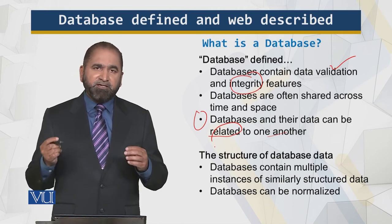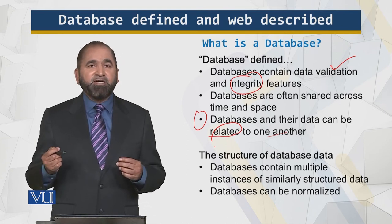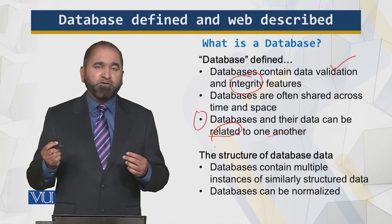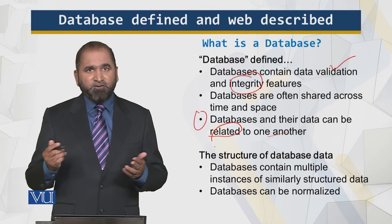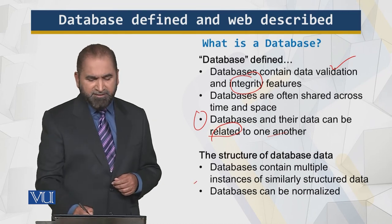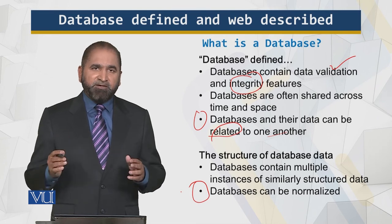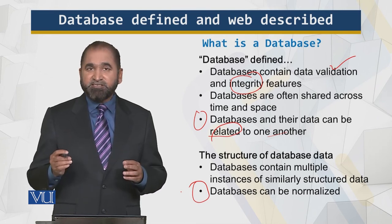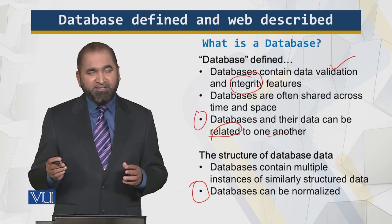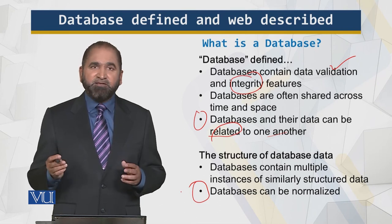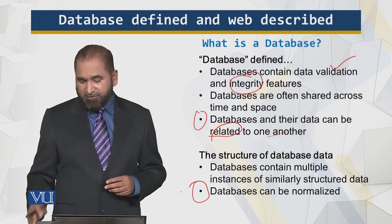I have data about customers who have been purchasing different items, and I have other customers purchasing other sets of items — those are all related. Databases can also be normalized, which means storing data in a certain way such that it can be accessed efficiently and quickly, with no anomalies and space savings.